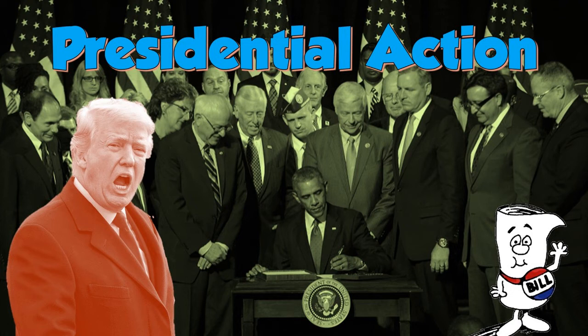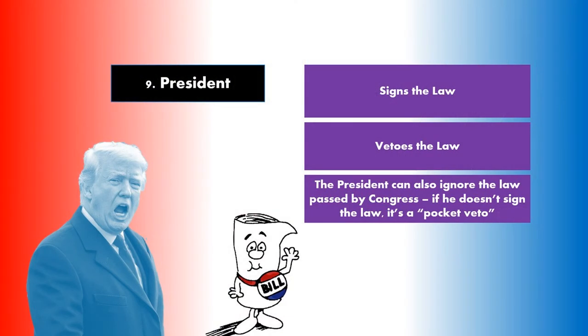Now it heads to the executive branch, and it's time to see what the president thinks of this bill. In the picture, you see President Obama signing a bill surrounded by senators who worked on the bill. One of the president's roles is called the chief legislator, meaning he has the final say over all policy passed by Congress. Once Congress has done all of those things and our bill has made it through the House, the Senate, the conference committee process, and been voted on again, now it goes to the president.